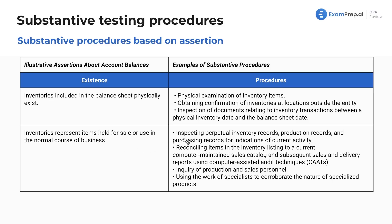What are we going to do here? We're going to inspect perpetual inventory records, production records, and purchasing records for indications of current activity — understand what they're actually selling. If they have a whole warehouse full of old iPhones and they don't sell iPhones, you should figure out what's going on. If they're listing iPhones as inventory and have never once sold iPhones, and it doesn't look like the company intends to sell iPhones, then you would question it.